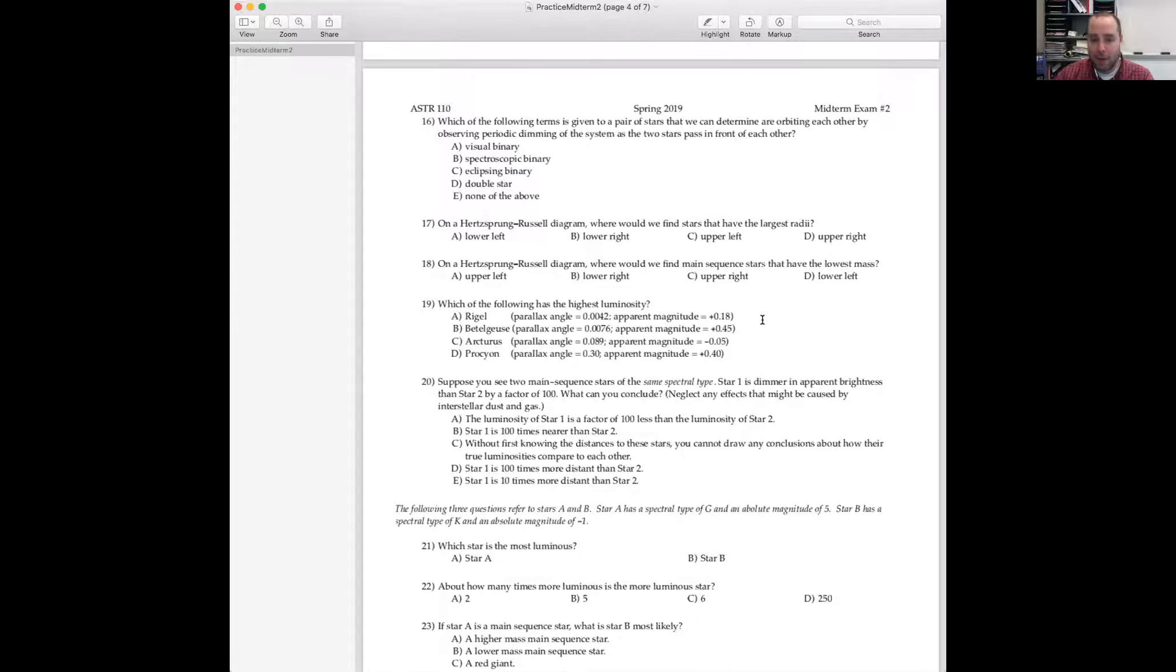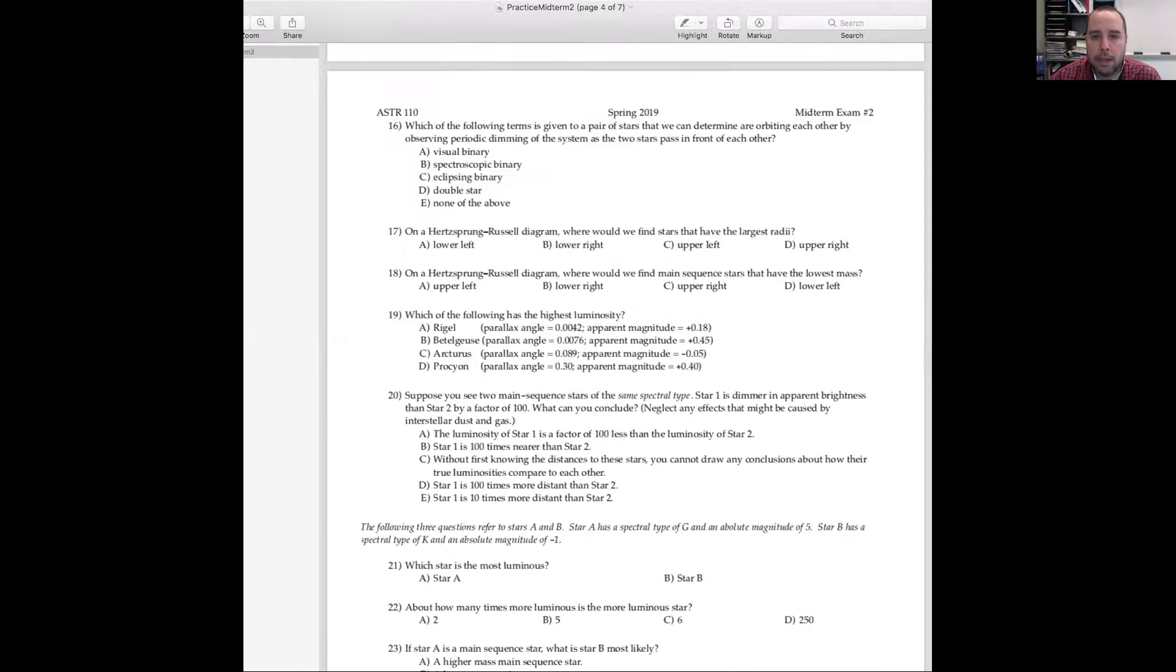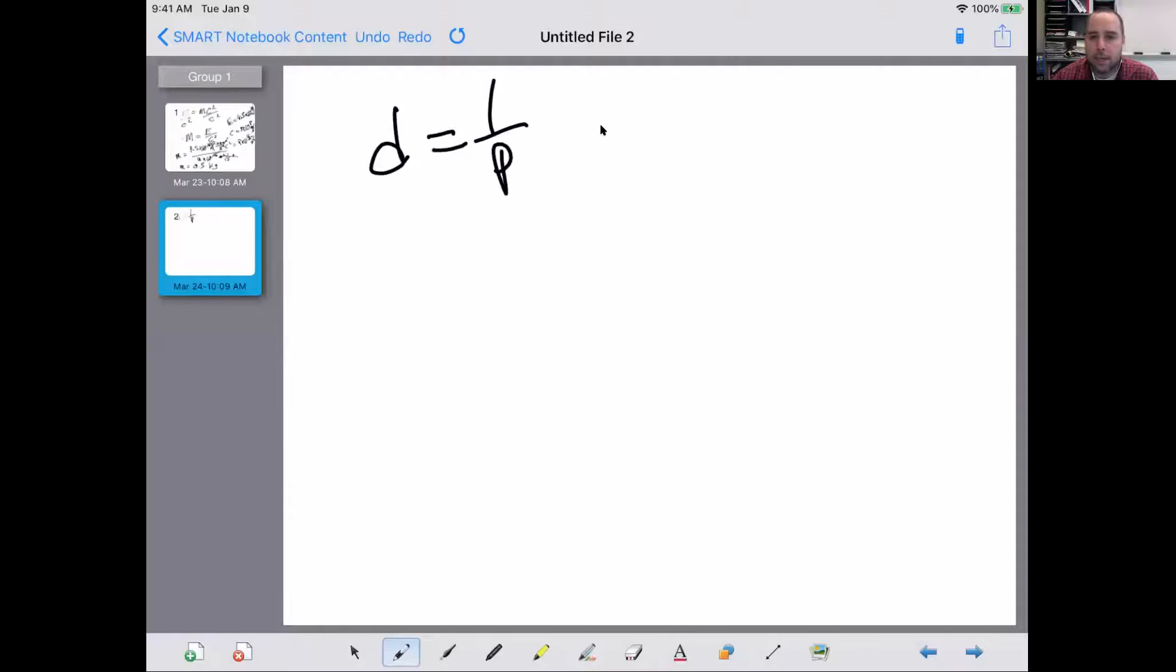But we have everything we need to know to calculate the actual absolute magnitudes of all of these stars. Because we have their parallax angle, we know that we can calculate distance from parallax angle. Because d equals one over p. Let me share with you my iPad. You're seeing that now? Good. d equals one over p.